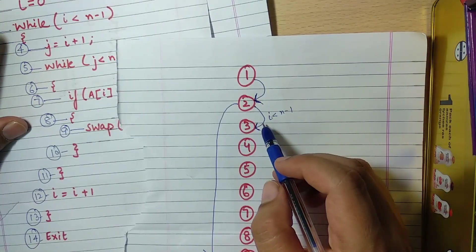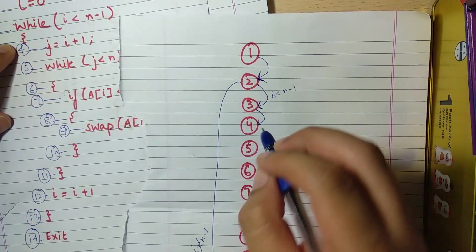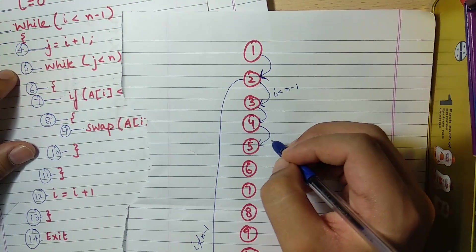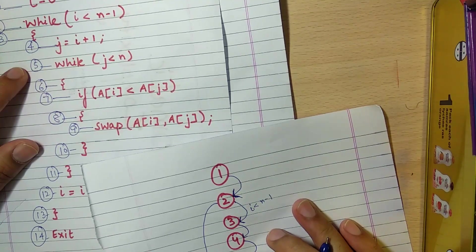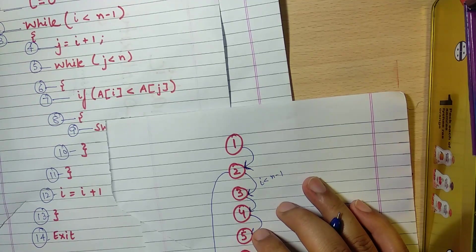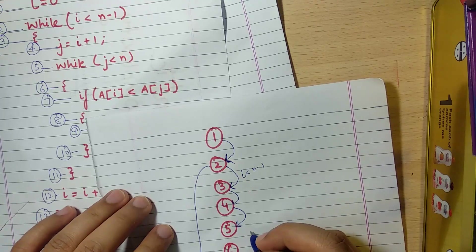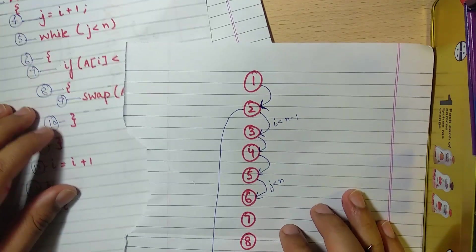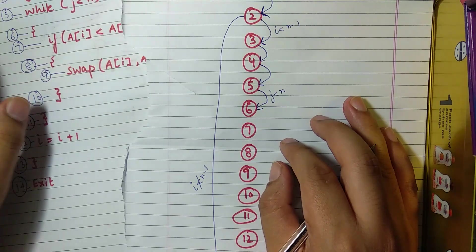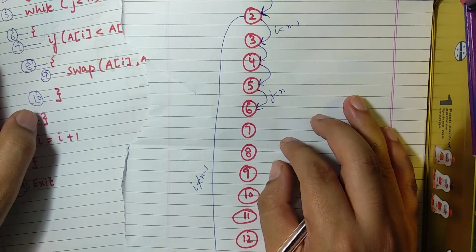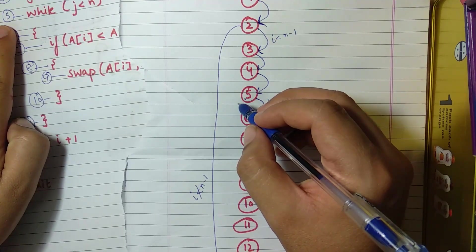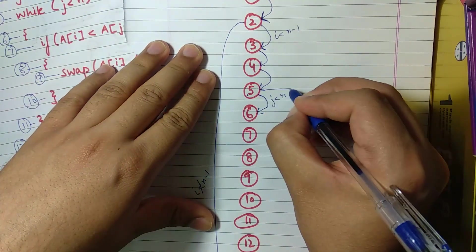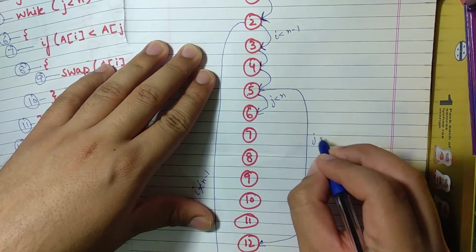Let's continue after 3. The third statement is a bracket — it will definitely go to 4. After 4 it is initialization of j: j is equal to i plus 1. It will definitely go to the next statement. The next statement is a while loop. The while loop says j is less than n, so it may or may not occur. If j is less than n it will go to the 6th statement. But if it is not, then it will go directly to 12 — that is, i is equal to i plus 1.